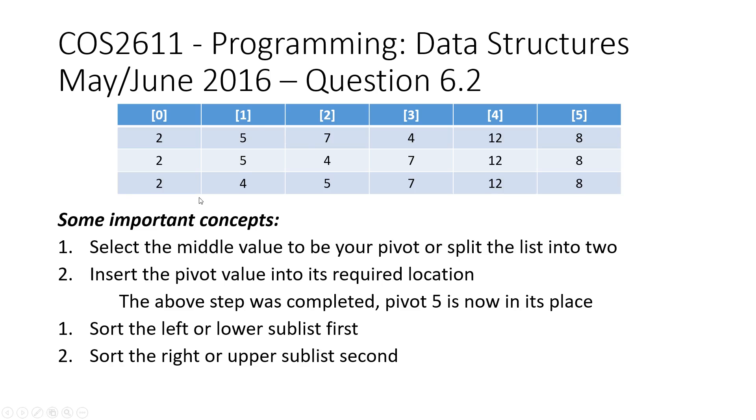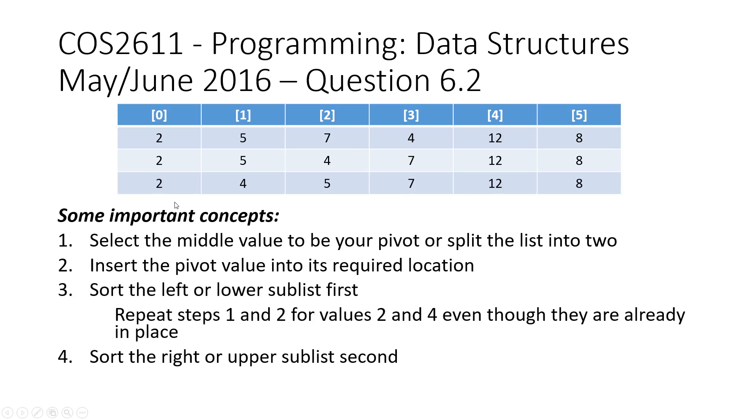So although I've got all this left side sorted, I think you still need to reflect it. So what I've done is I've just said repeat steps 1 and 2 for values 2 and 4, just so that UNISA can see that you selected the 4 as a pivot and you selected the 2 as a pivot, and they are in the correct location.